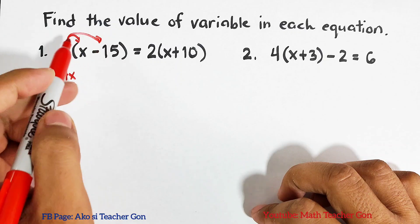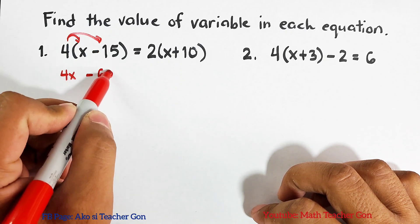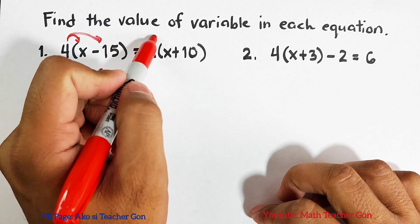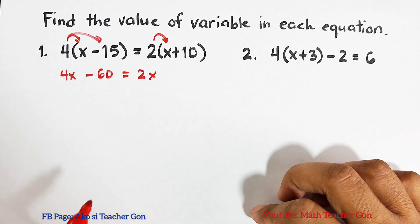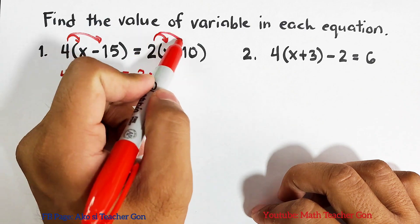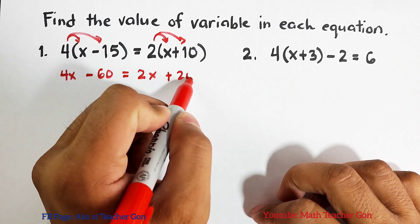That would be equal to 2 times x, that is 2x. 2 times 10, that would be 20. This is plus 20.